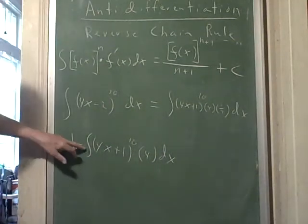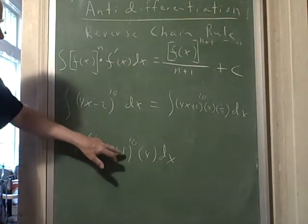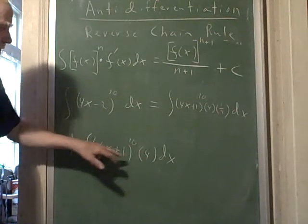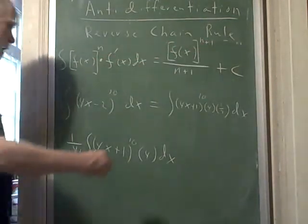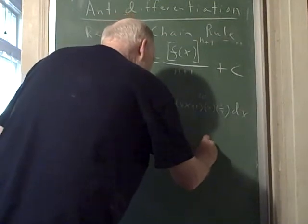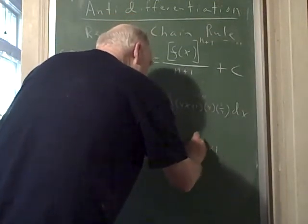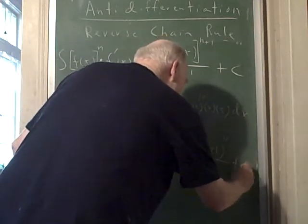Now I've got what I want with this integral. I've got a function to a power times the function's derivative. That means I can just go right to the function, to the n plus 1 over n plus 1, and this 4 will disappear. So I'll end up with 4x plus 1 to the 11th power over 11 plus constant.